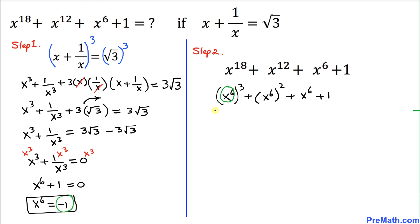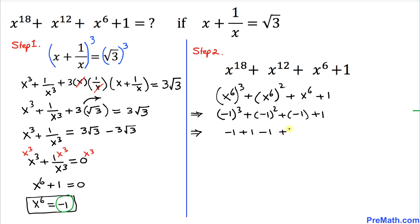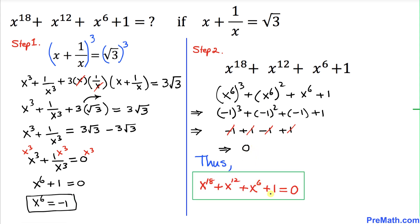Replacing x power 6 with negative 1: negative 1 power 3 plus negative 1 power 2 plus negative 1 plus 1. Negative 1 cubed is negative 1, negative 1 squared is positive 1, then minus 1, then plus 1. The negative 1 plus 1 cancel, and negative 1 plus 1 cancel, so everything yields 0. Thus the value of this expression turns out to be 0, and our final answer is 0.